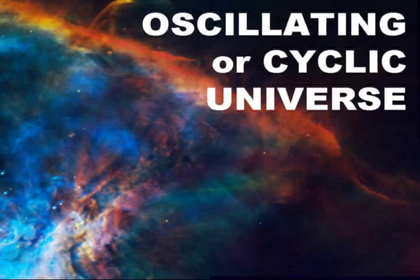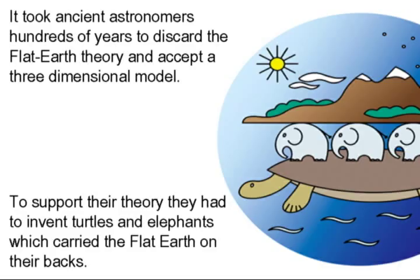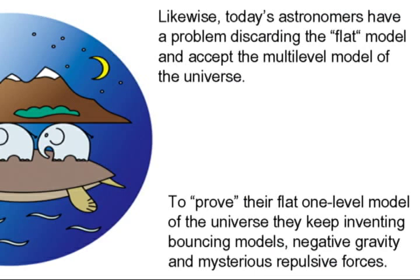In the oscillating or cyclic universe model, it took ancient astronomers hundreds of years to discard the flat earth theory and accept a three-dimensional model. To support their theory they had to invent turtles and elephants carrying the flat earth on their backs. Likewise, today's astronomers have a problem discarding the flat model and accepting the multi-level model of the universe. To prove their flat one-level model, they keep inventing bouncing models, negative gravity, and mysterious repulsive forces.